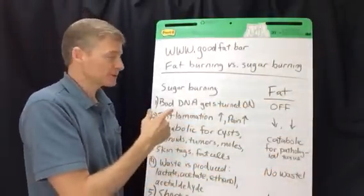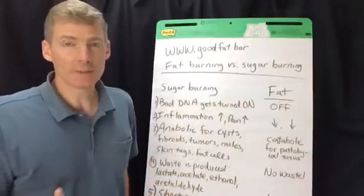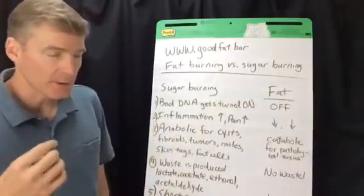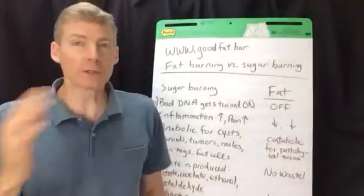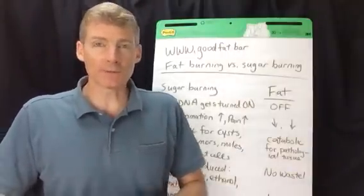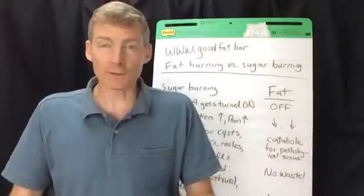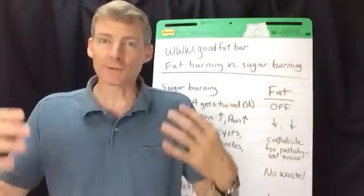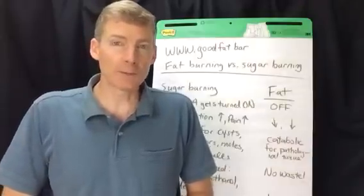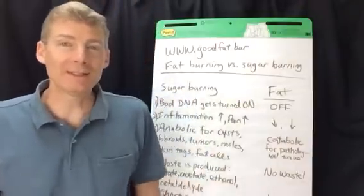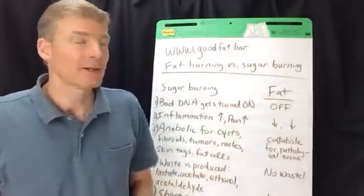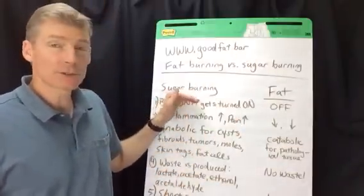There are some disadvantages to burning sugar. Ideally your body is burning fat. Burning sugar 200 years ago was actually quite rare — people burned sugar maybe in the summertime when there was a lot of fruit, but they didn't eat a lot of fruit in the spring, fall, or winter. The other time people burned sugar is if they were being chased by a bear and needed quick energy to run to the nearest tree and climb up.